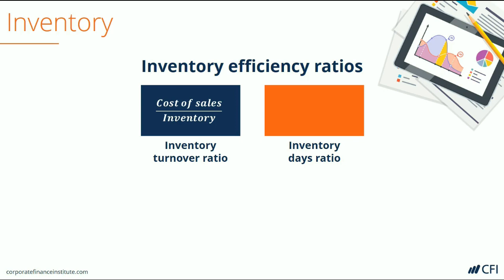The other Inventory Efficiency Ratio is the Inventory Days Ratio. This is used to measure the average amount of time that inventory is on hand or remaining on the balance sheet. The ratio is calculated by taking the inventory, multiplying it by 365 days in the year (or the number of days in the period being used), and then dividing that by the Cost of Sales or Cost of Goods Sold.